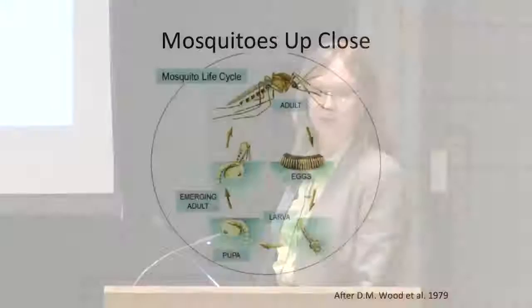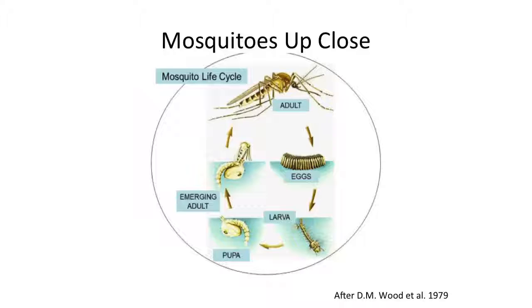Adult female mosquitoes take a blood meal in order to mature a batch of eggs. They lay those eggs, the eggs hatch - this is all an aquatic life cycle. The eggs hatch into larvae, they go through four larval instars, then they metamorphose into the pupal stage, and then this undergoes a massive metamorphosis in order to have an adult come out. So we've got four life stages: eggs, larvae, pupae, adults - and three of them occur in aquatic habitats in standing water.